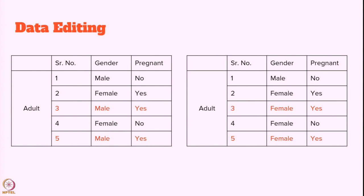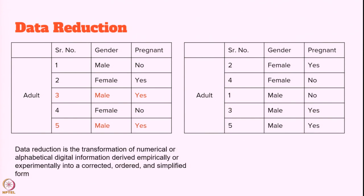One is data editing. We know that we collected data for pregnant, and we know that male cannot be pregnant, so we change the value from male to female. This is called data editing, where we edit the data. Another approach is data reduction — we are more interested in female data, so we only consider instances where female was entered, and from that we do the analysis. Instances 2 and 4 are the ones with female, so we use only those two. This is a simple example of data reduction.